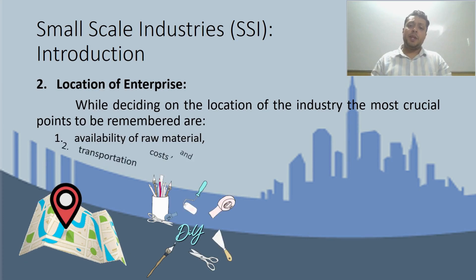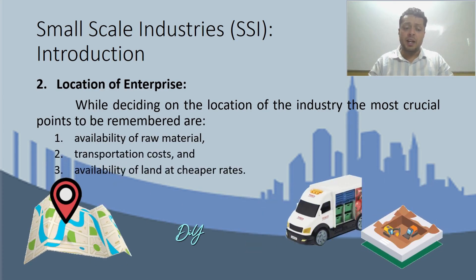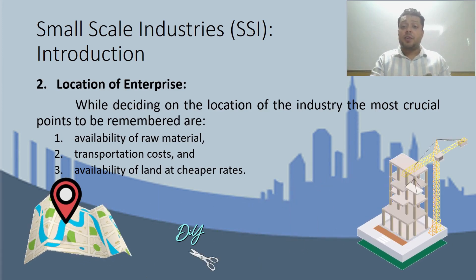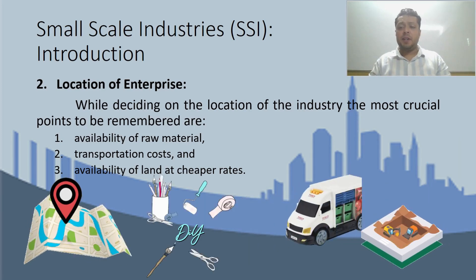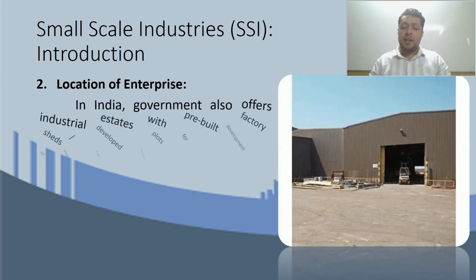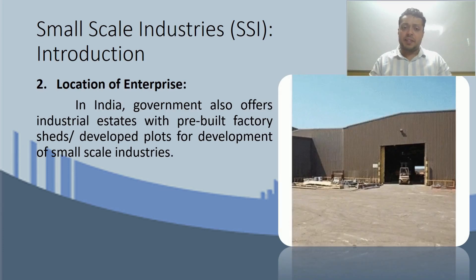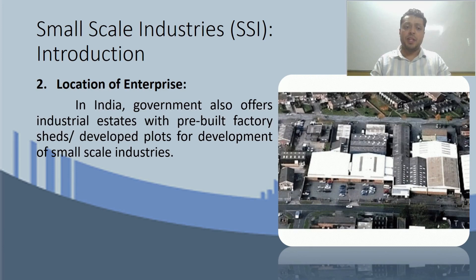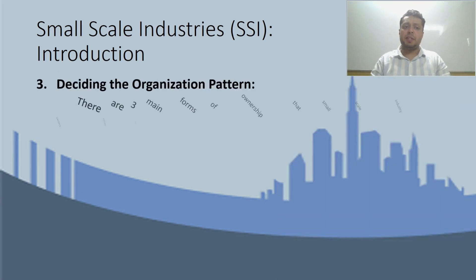Point number two: location of enterprise. When deciding the location of an industry, keep these points in mind — raw material should be easily available there; transportation costs, whether for raw material or finished goods, should be low; and land should be available at low rates in that location. In India, the government provides certain industrial estates that already have pre-built factory sheds and developed plots specifically for the development of small-scale industries.